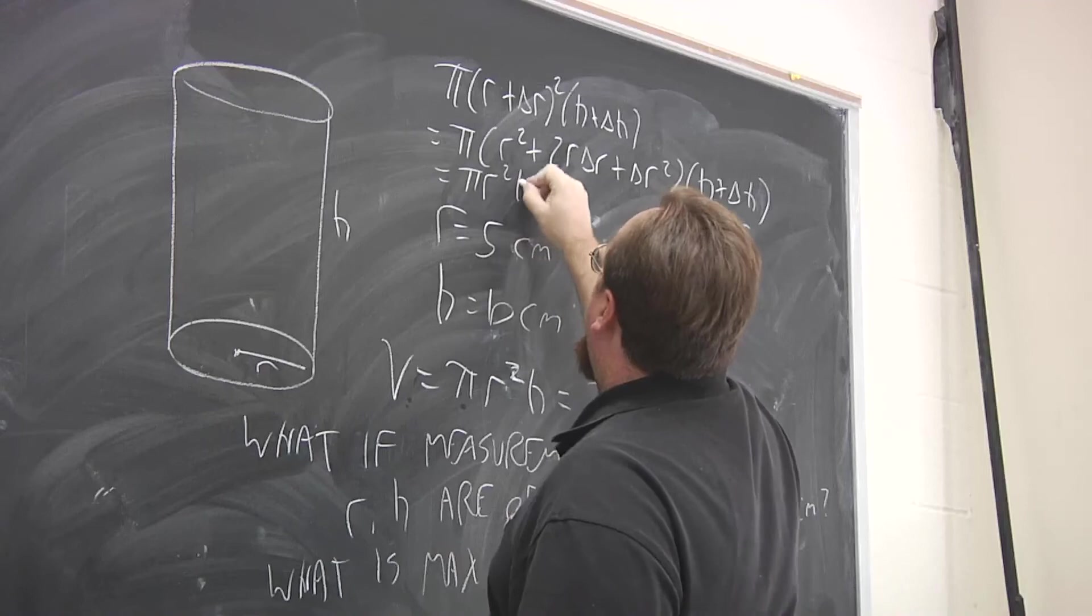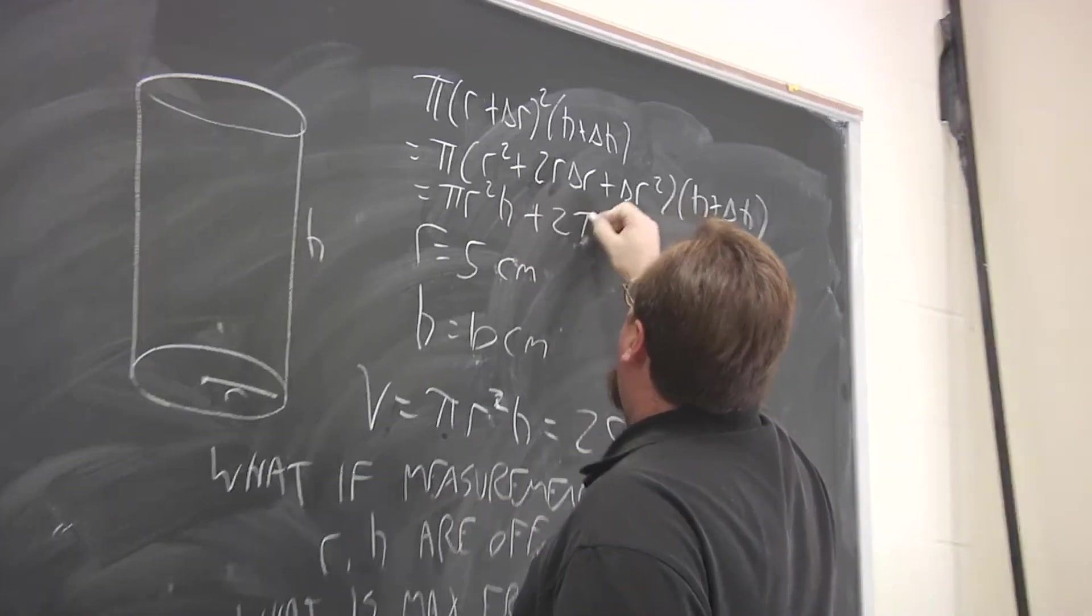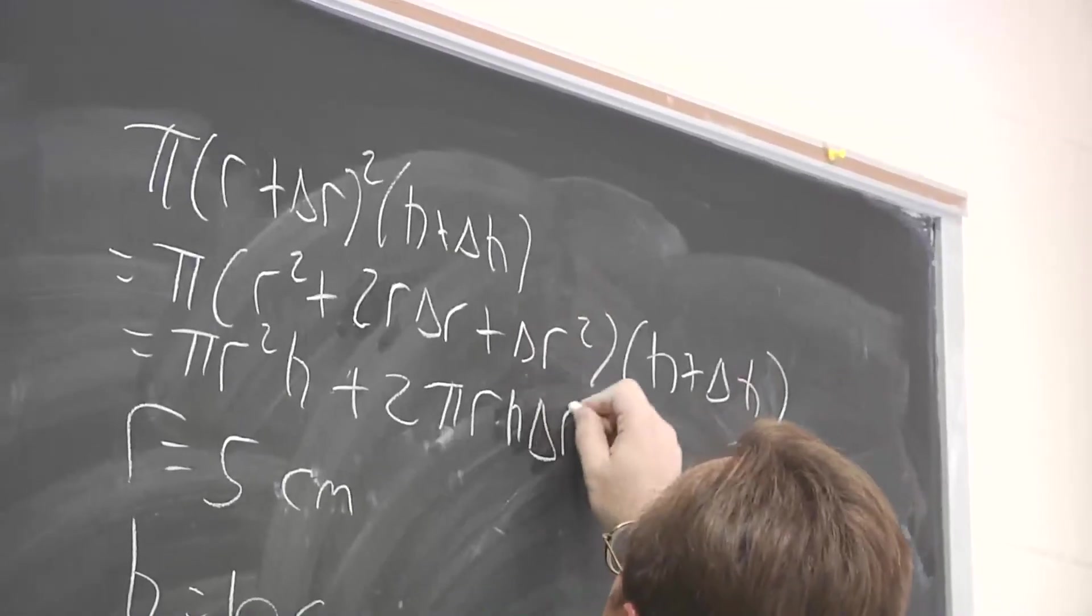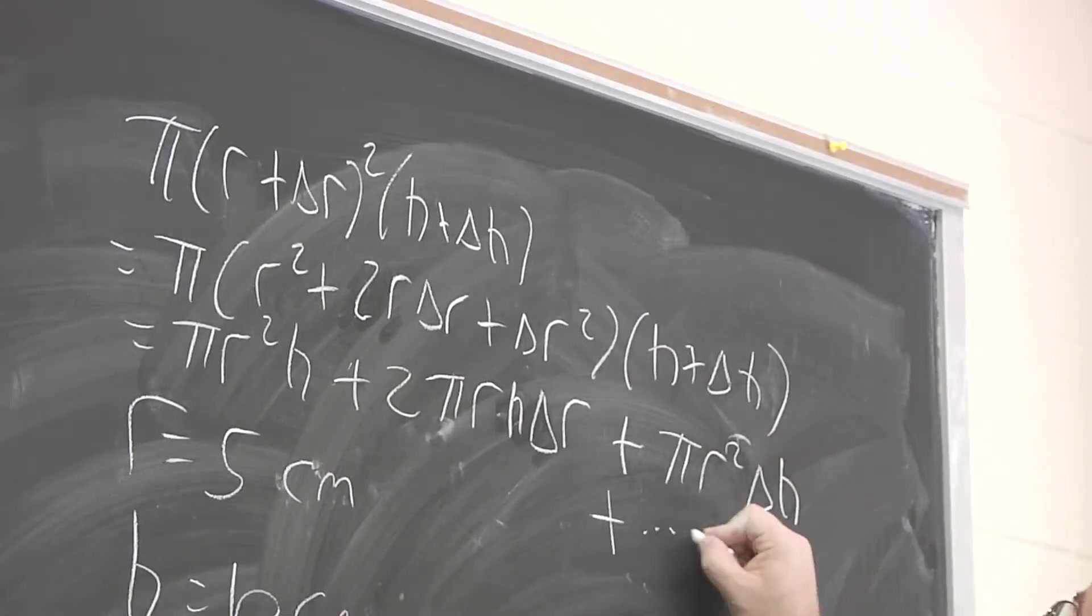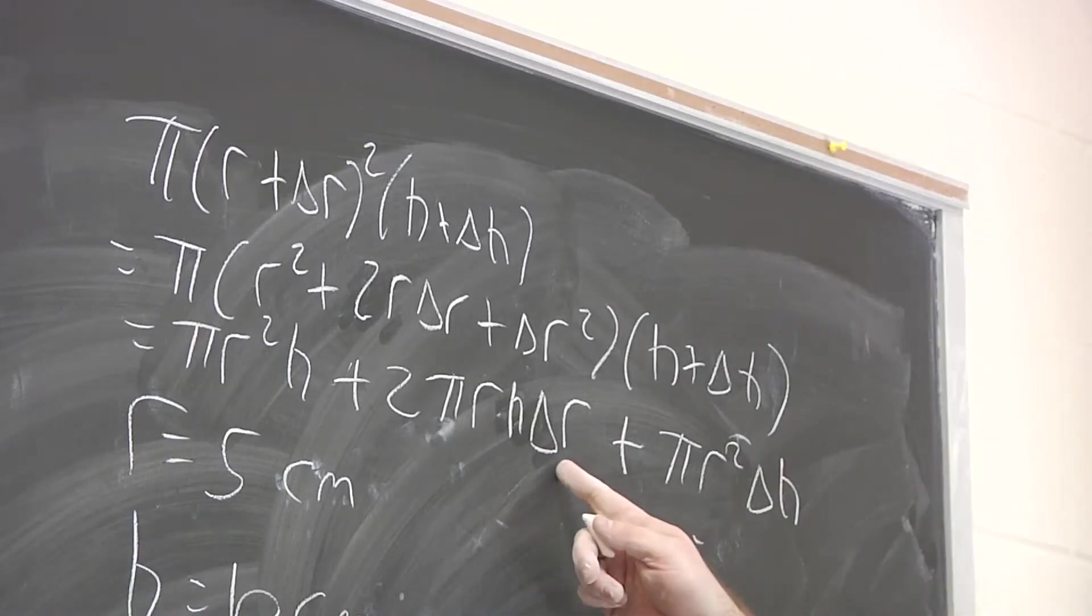So we get πr²h, the exact volume, plus 2πrhΔr plus πr²Δh, plus additional terms that are going to be smaller. So notice the error in R is amplified by r and h.